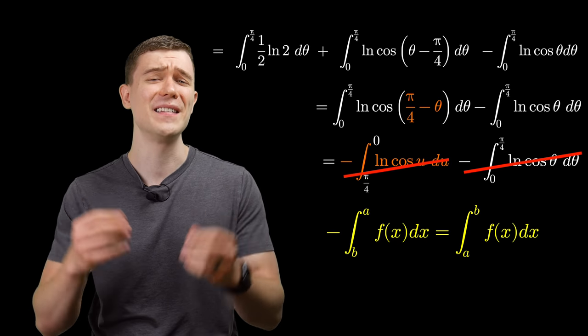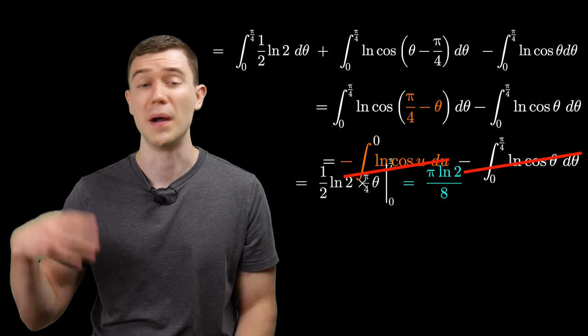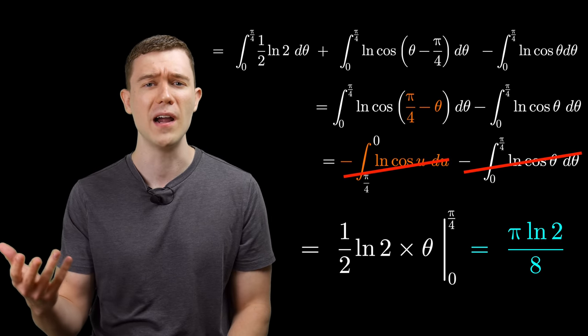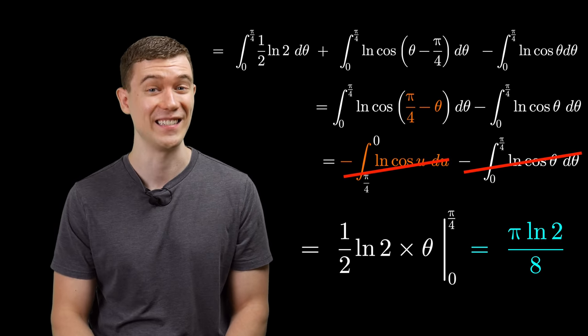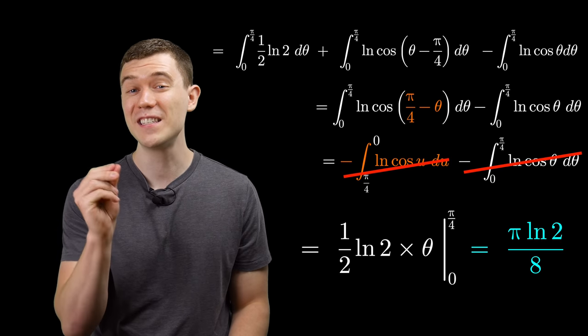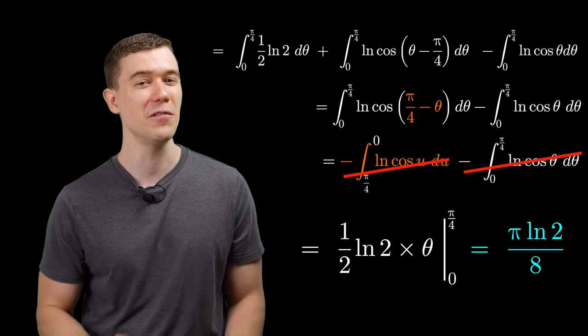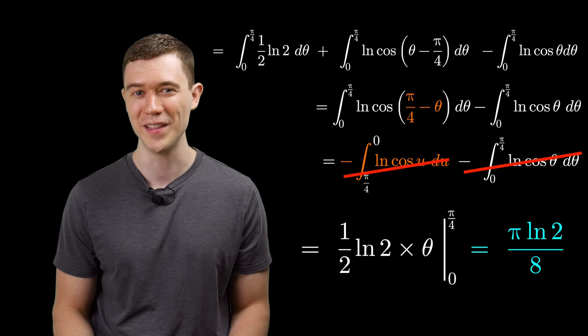All that's left to do is anti-derive this constant by multiplying it by theta, substitute in pi over 4, and there you go is our answer to that slick definite integral. If you like seeing super cool integrals, click the video on the screen. I'll see you in that one.